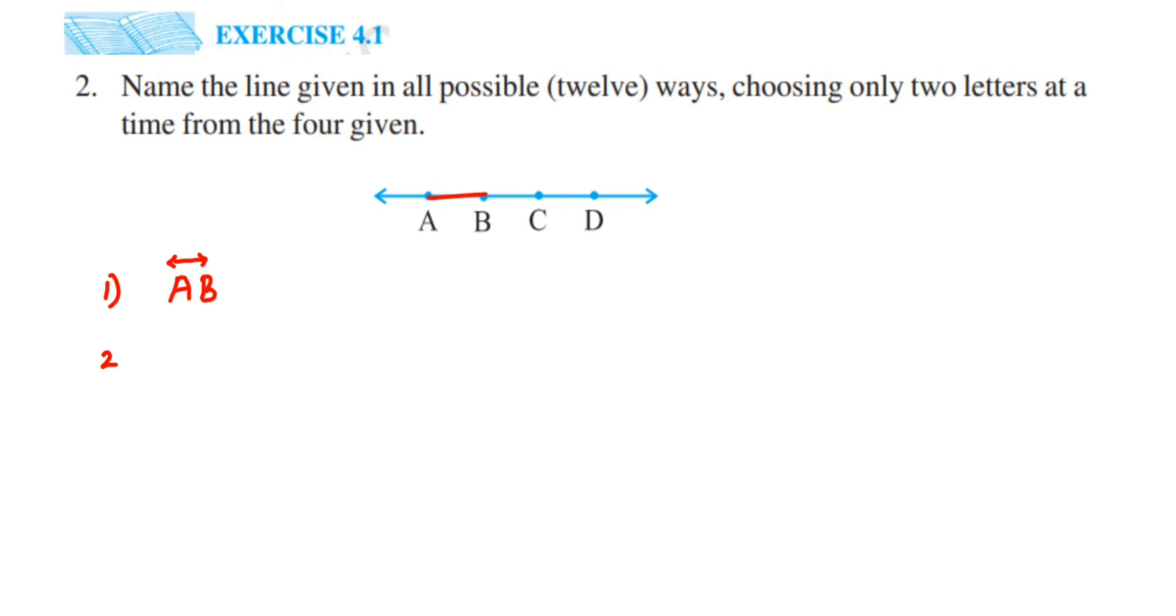And the second one will be AC, like this from A to C. So AC is my second line. And the third one will be AD, from A to D, right?